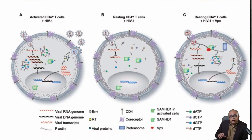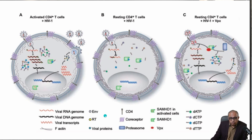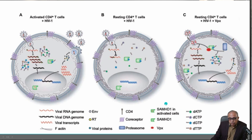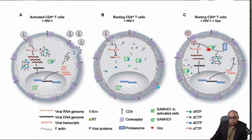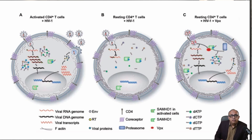SAMHD1 regulates the intracellular pool of dNTPs in non-dividing cells, particularly resting CD4 cells. In these cells SAMHD1 prevents the accumulation of dNTPs. If you look at the diagram, you can see the dNTPs floating around as dots, and the number of these dNTPs is very low in the resting CD4 plus T-cells. The reason they are less is because SAMHD1 is active and removing all the dNTPs, since the cell is non-dividing and has no need for them.